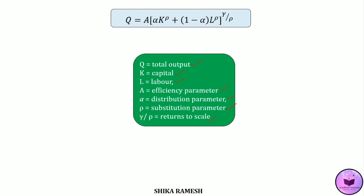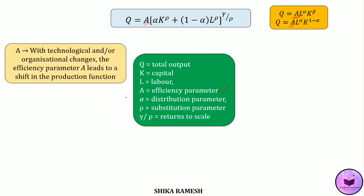We already know the general form of a Cobb-Douglas Production Function, i.e., Q = AL^α·K^β or Q = AL^α·K^(1−α). There are some similarities between the Cobb-Douglas Production Function and the CES Production Function. First, both are linear homogeneous production functions. Secondly, the A in both the Cobb-Douglas and CES Production Functions represents the available technology or efficiency parameter, which indicates the state of technology used by the firm as well as the organizational aspects of production.